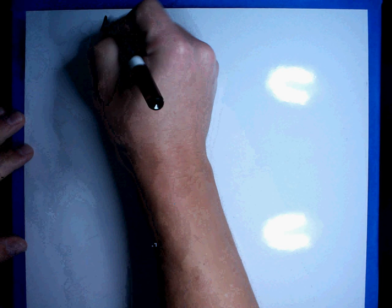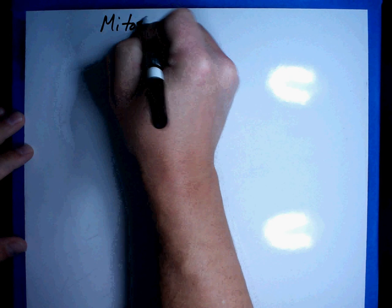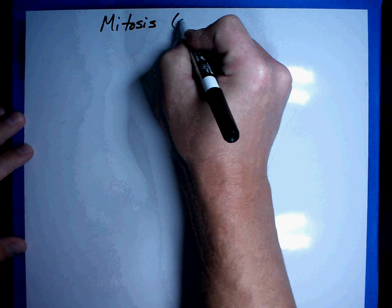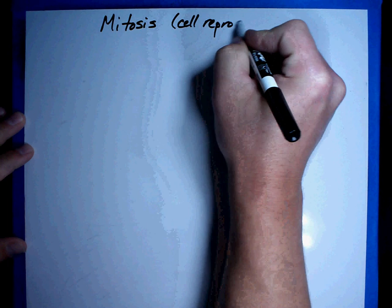Alright, we've already talked about the cell and the parts of the cell. The next thing we're going to talk about is what is called mitosis or cell reproduction.